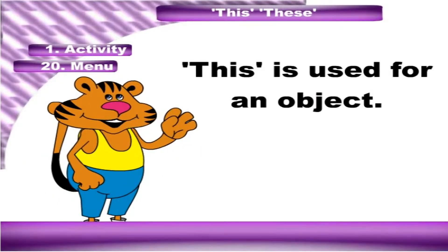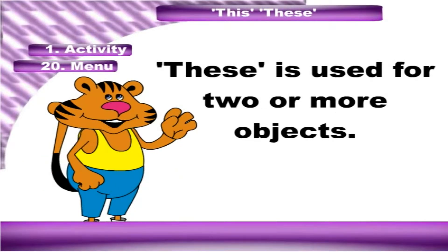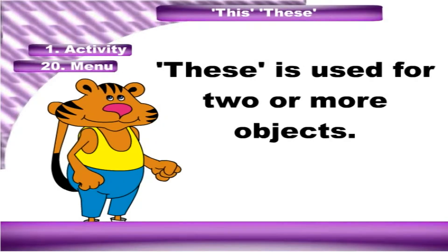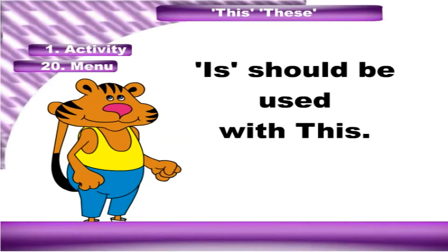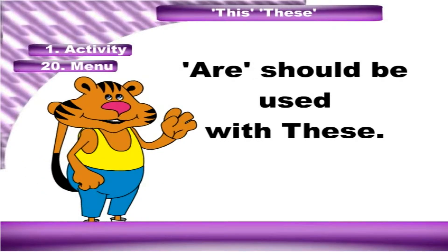This. These. This is used for one object. These is used for two or more objects. Is should be used with this. Are should be used with these.